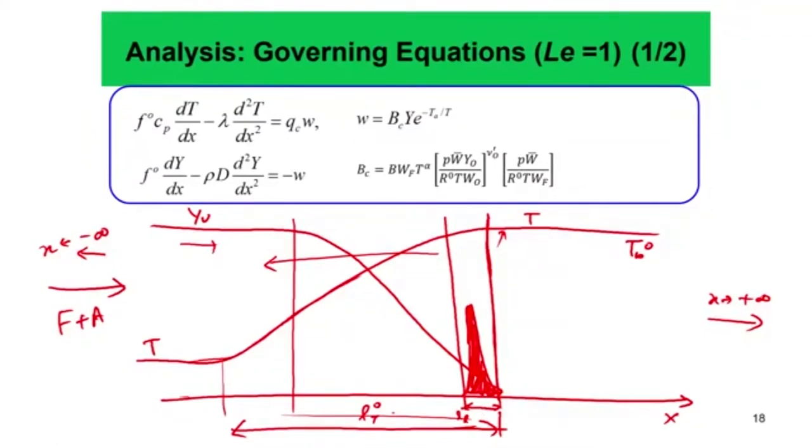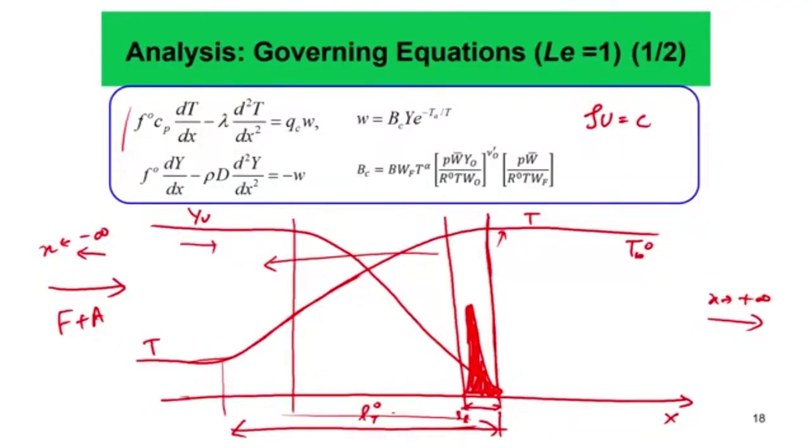For this 1D problem, we do not need to consider the momentum equation because for subsonic flames (order-1 acceleration), the pressure gradient is of order Mach number squared — really small. The continuity equation gives ρu = constant = F_0 everywhere. So we consider the energy equation directly: ρu · C_p · dT/dx − λ · d²T/dx² = Q_c · W, where Q_c is the chemical heat release rate normalized by reference fuel.